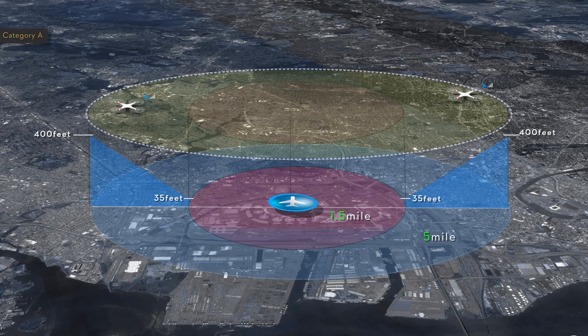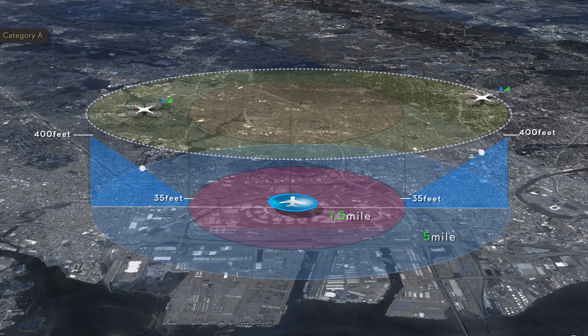While your Phantom is landing, you will be able to control the Phantom, except for being able to fly it higher. If you are between 1.5 and 5 miles away from a Category A zone, your Phantom will automatically descend to that area's designated height limit.